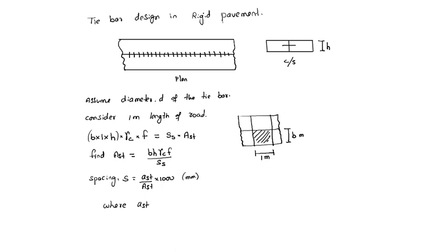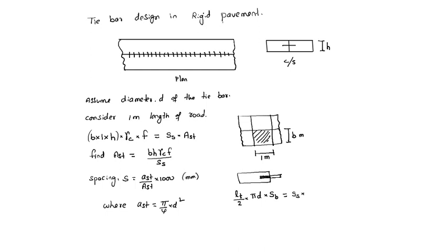For the length of the bar, half the length will be in each slab. So L_T by 2, multiplied by the perimeter (pi × D) multiplied by bond stress SB, must equal the stress in the steel multiplied by the area of the bar, which is pi × D squared by 4.